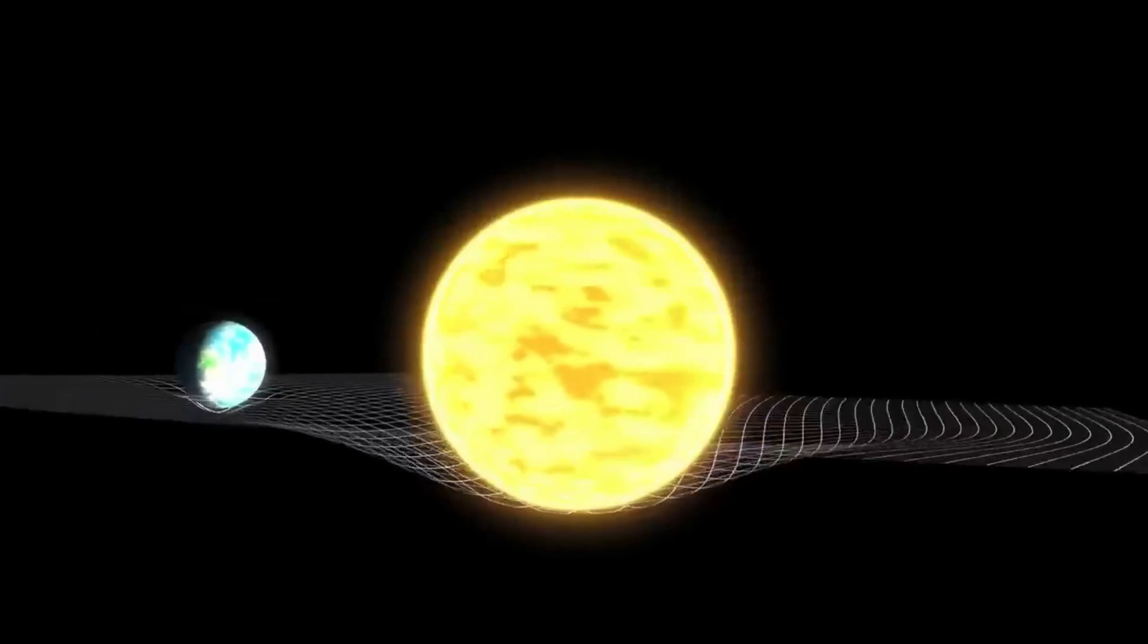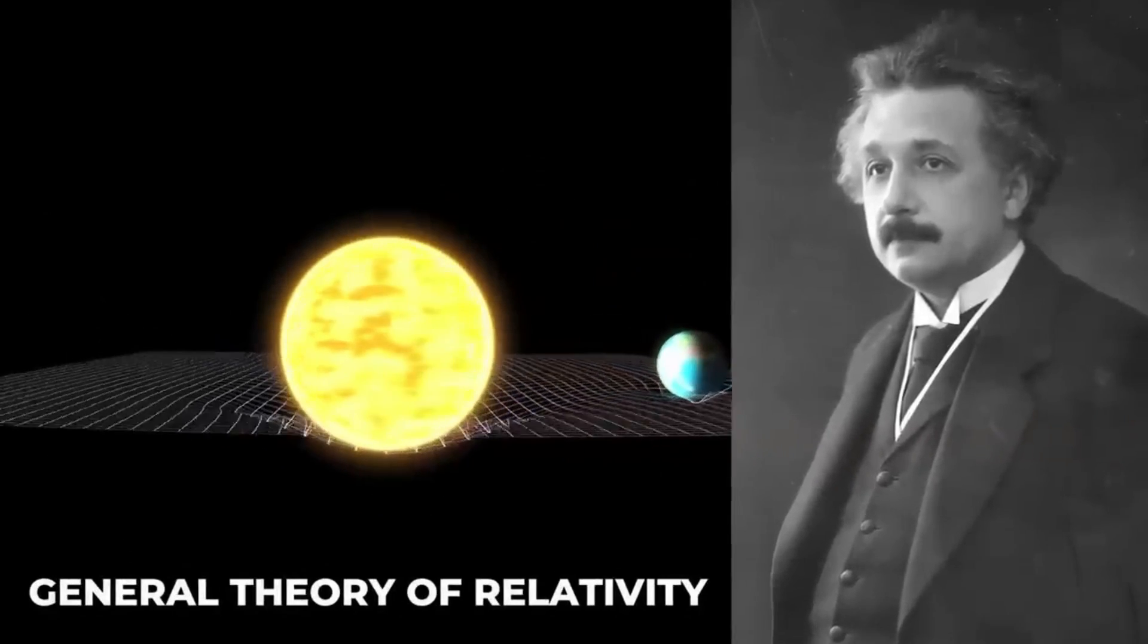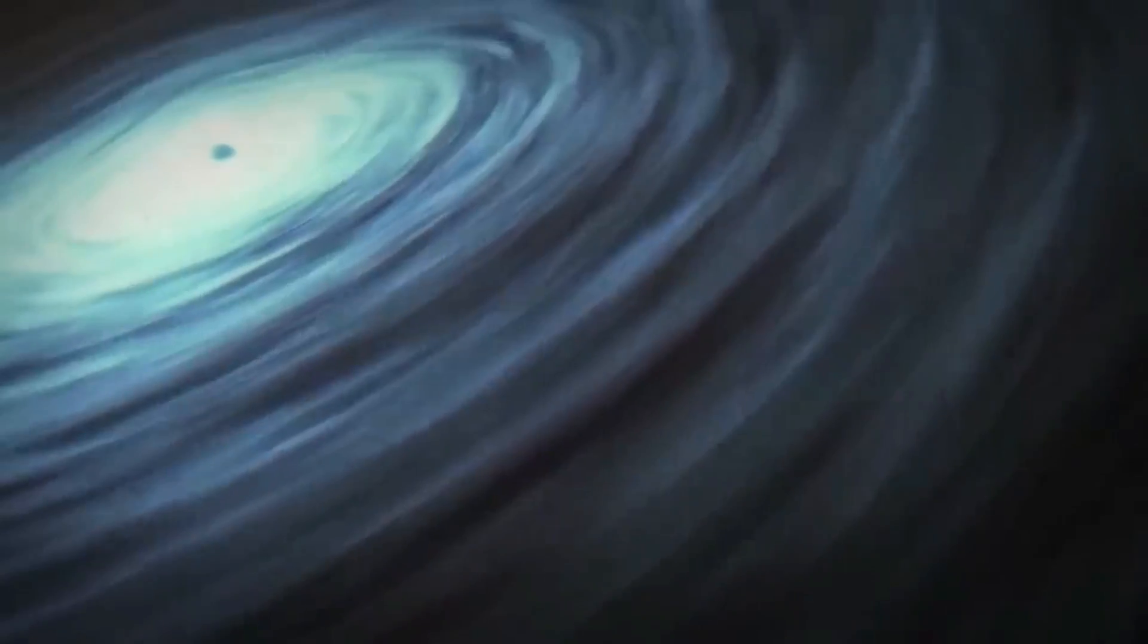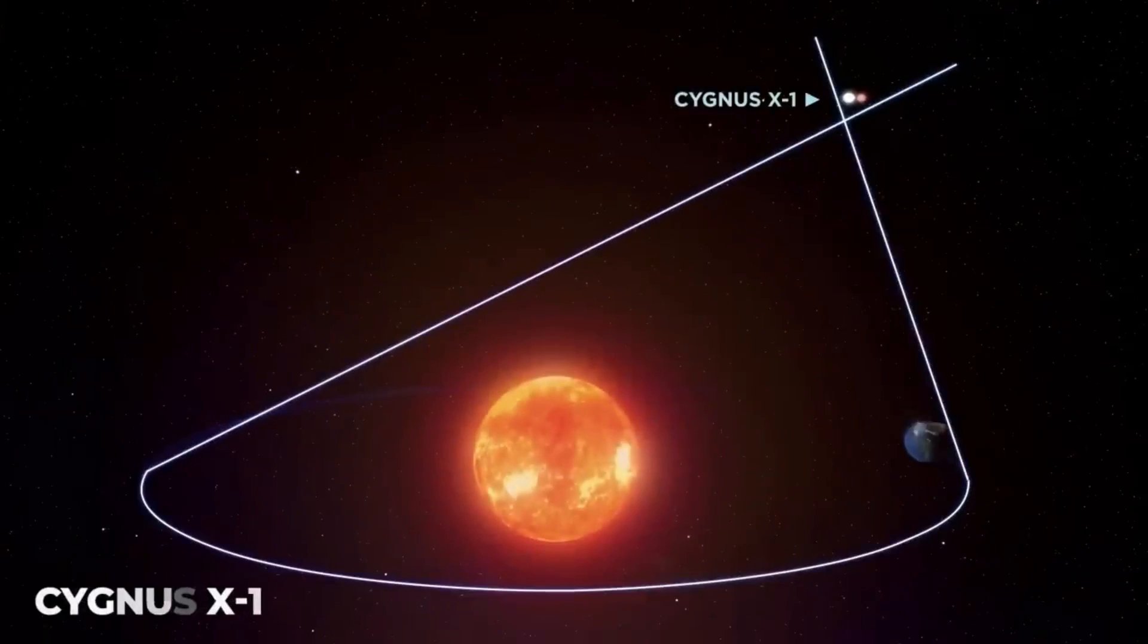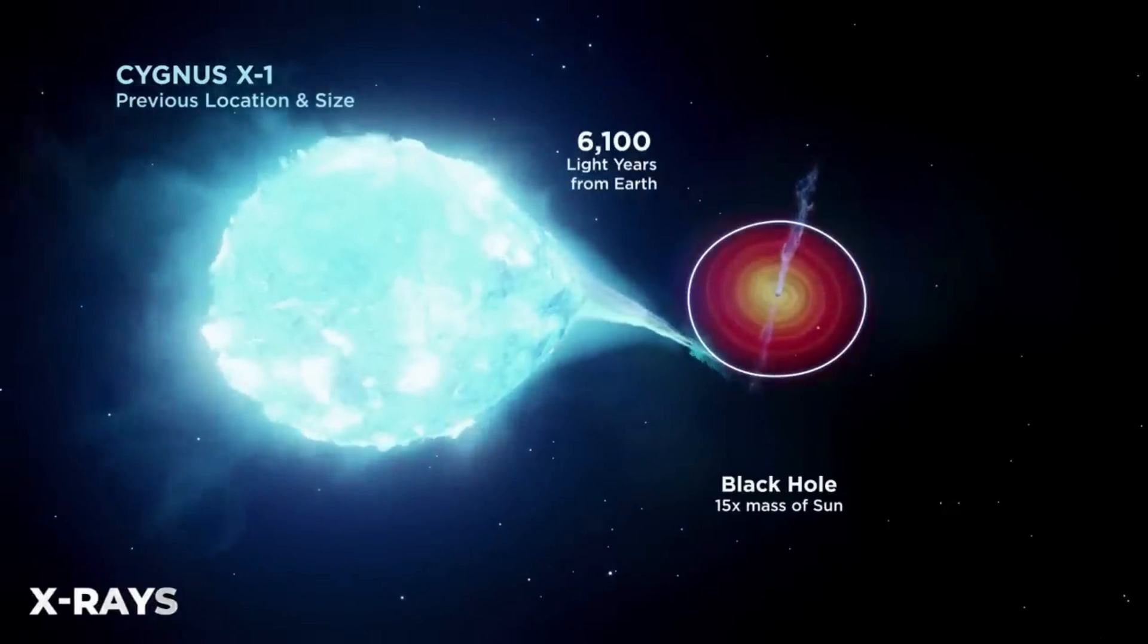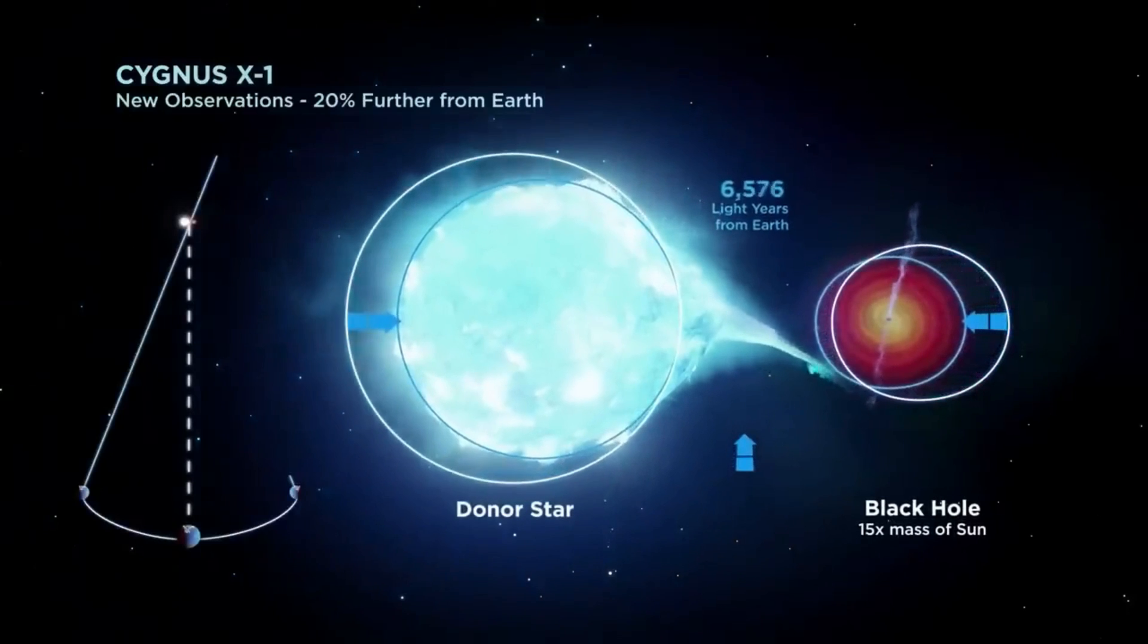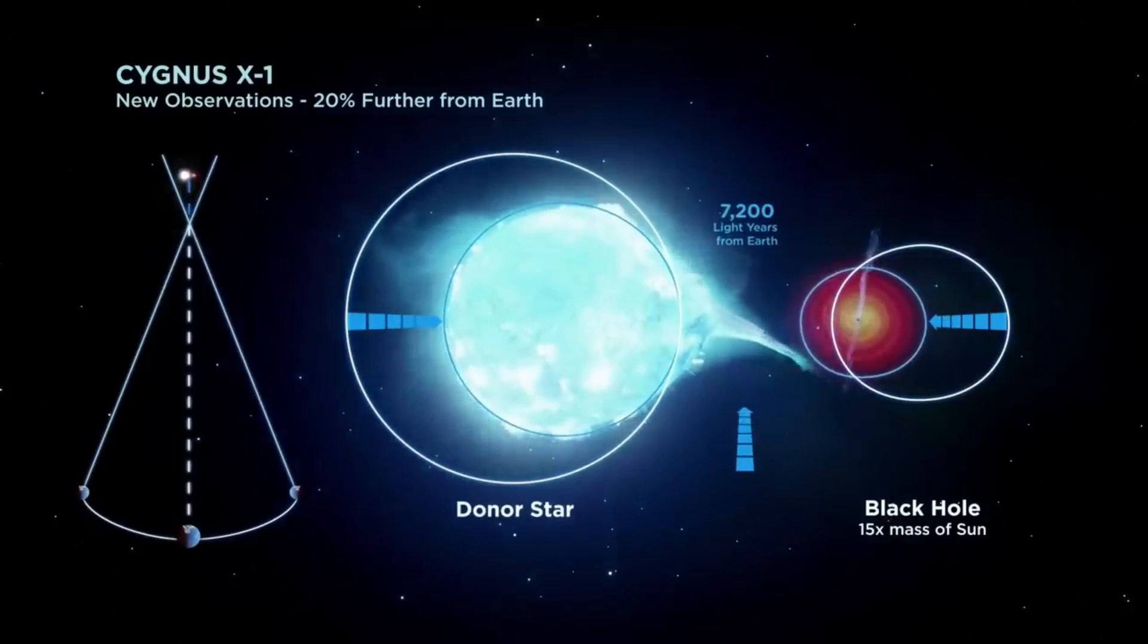For centuries scientists have been fascinated by these mysterious objects, which were predicted by Albert Einstein in his theory of general relativity in 1915. However, it wasn't until the late 1960s that scientists were able to officially prove their existence. This happened when researchers studying the Cygnus constellation noticed an unusually bright blue star emitting X-rays and orbiting a massive black something. Further investigation revealed that the X-rays were being sucked into this enigmatic entity, leading scientists to believe it was a black hole.